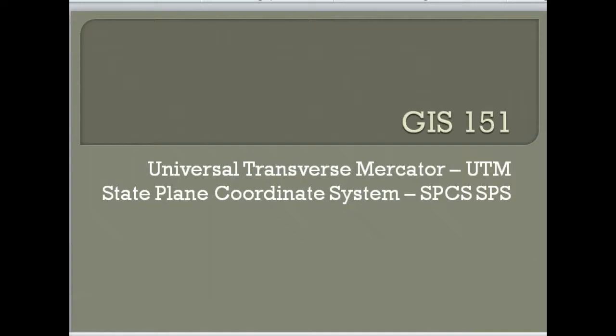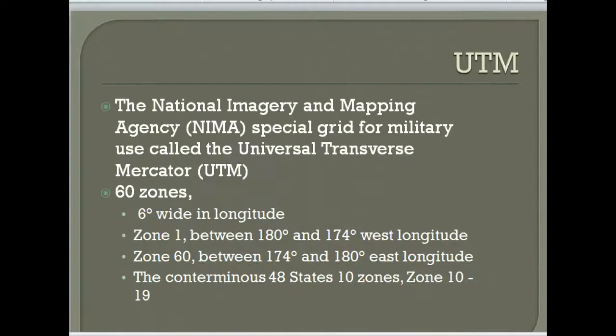In addition to the geographic coordinate system of latitude and longitude, we need to cover the Universal Transverse Mercator system and the state plane coordinate system. Both are grid systems used for location. The UTM was developed by the National Imagery and Mapping Agency, and it's a much more accurate and easy-to-use system where the world is divided into 60 zones running north and south. Each zone is 6 degrees wide, so 6 times 60 is 360 degrees — the whole circumference of the Earth.